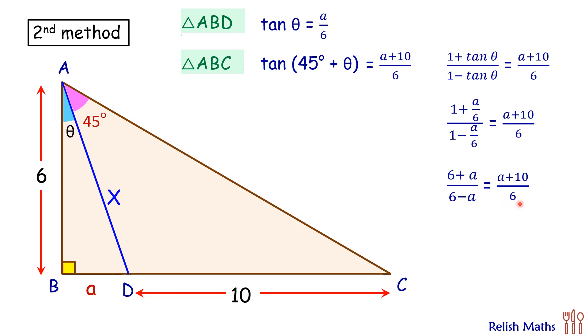Solving the quadratic and keeping the positive value we'll get a as 2 centimeter. Now in triangle ABD we'll put a as 2 and using Pythagoras theorem we'll get value of x as 2 root 10 centimeter. And that's our answer.